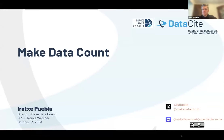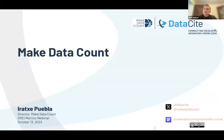In the interests of time, I think we will get started now. Thank you everybody for joining. This is the Open Metrics part of the GRAY campaign. GRAY, for those who don't know, is the Generalist Repository Ecosystem Initiative. I'm Mark Hannell, co-chair of the Open Metrics subcommittee with Matt Buys of DataCite. Today we're going to be talking about how we came up with the plan to work on this topic, what came beforehand, what we've done so far, and what we're looking to do in the future.